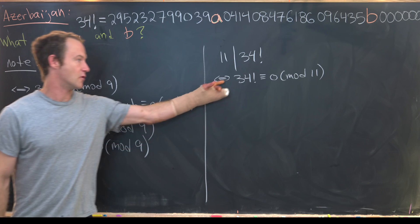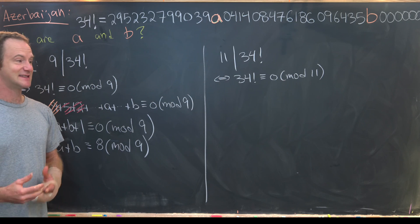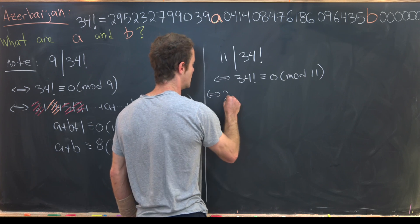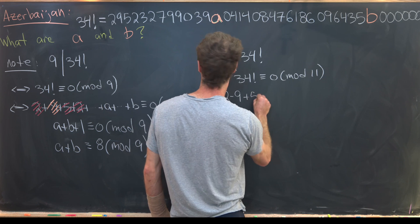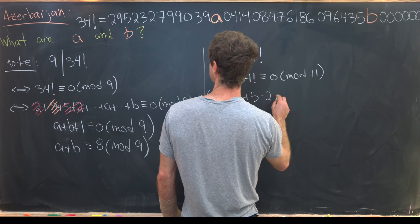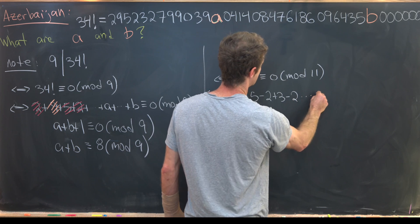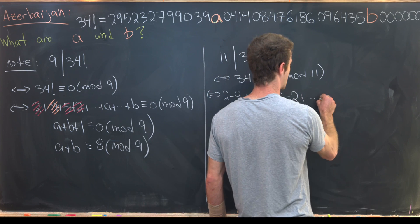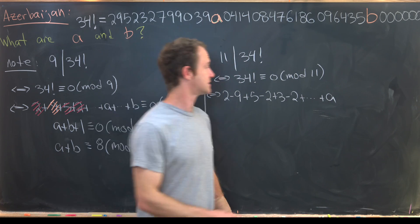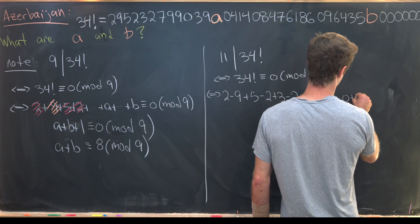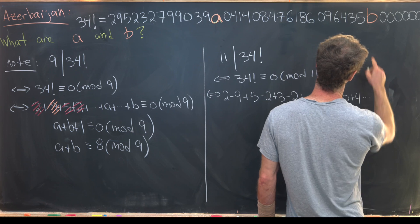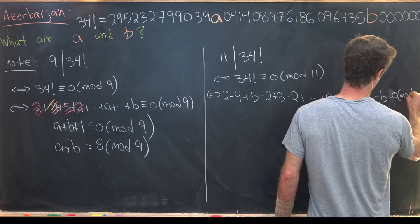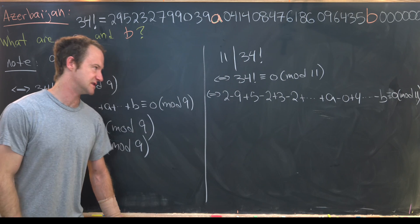Now we can play the same game over here, except instead of a sum, it's an alternating sum. So what I mean by that is we take 2 minus 9 plus 5 minus 2 plus 3 minus 2 and so on and so forth. And then as we work all the way down, we'll see that a is attached to a plus and then we'll have minus 0 plus 4 and then all the way down and b will be attached to a minus. And we know that is congruent to 0 mod 11 by this alternating sum rule for divisibility by 11.